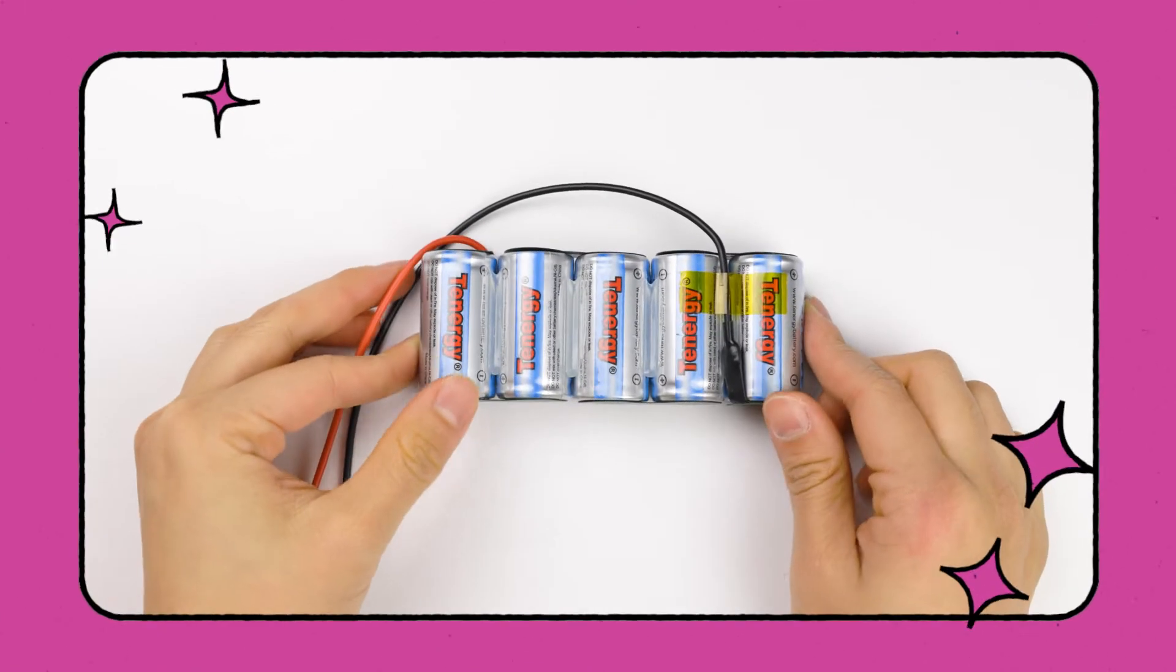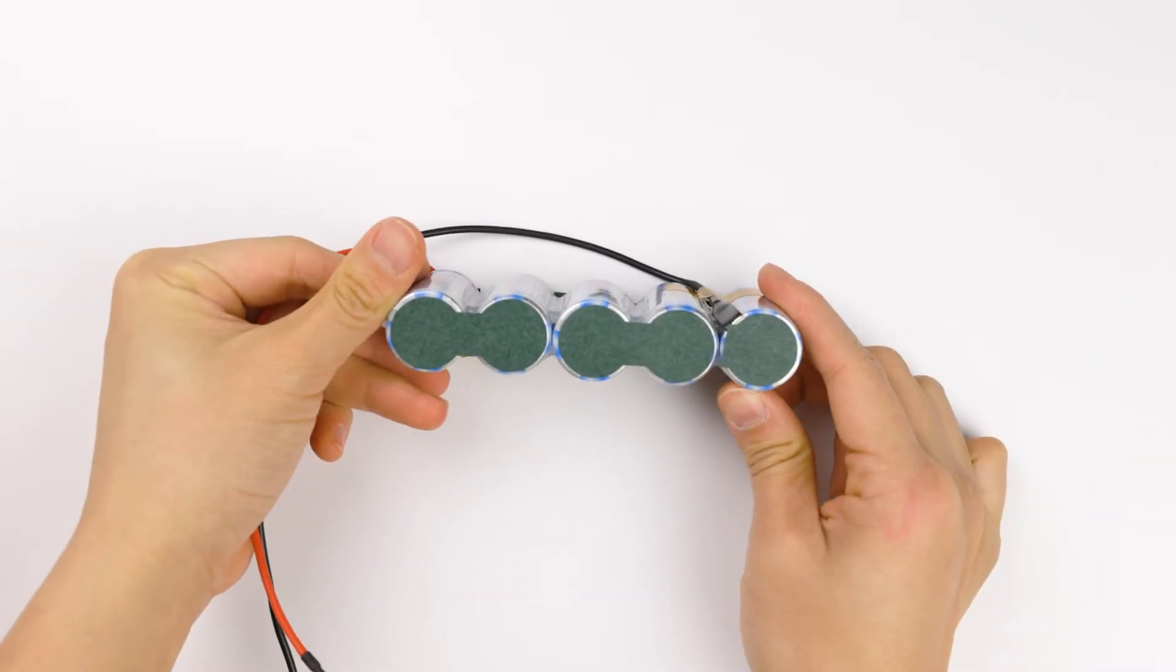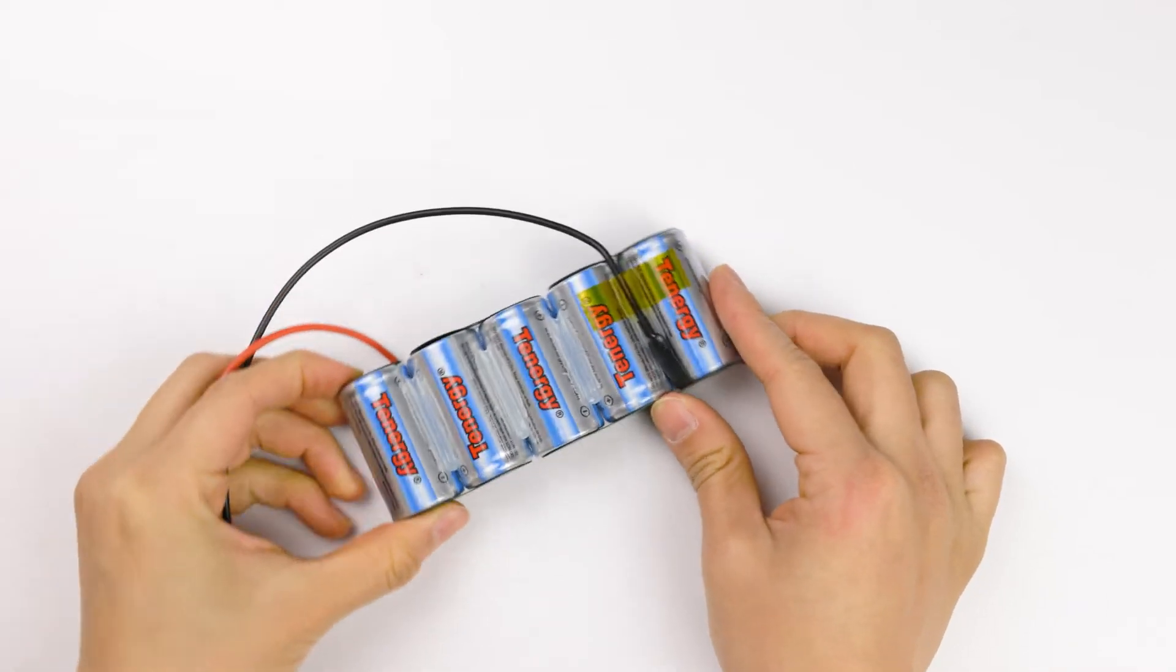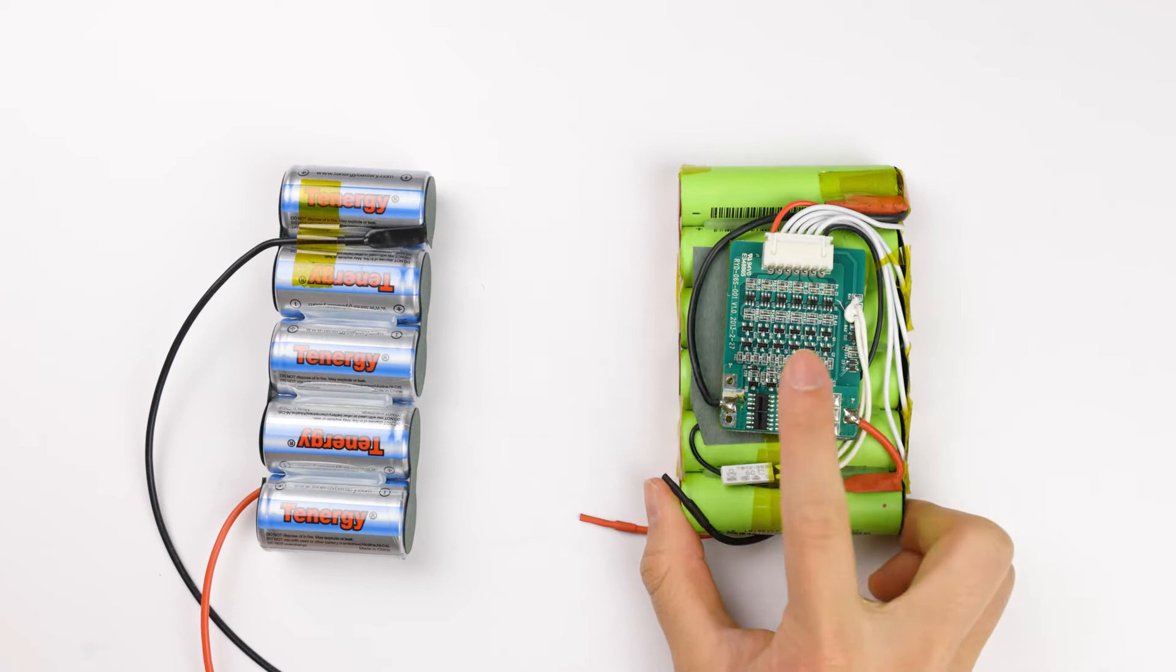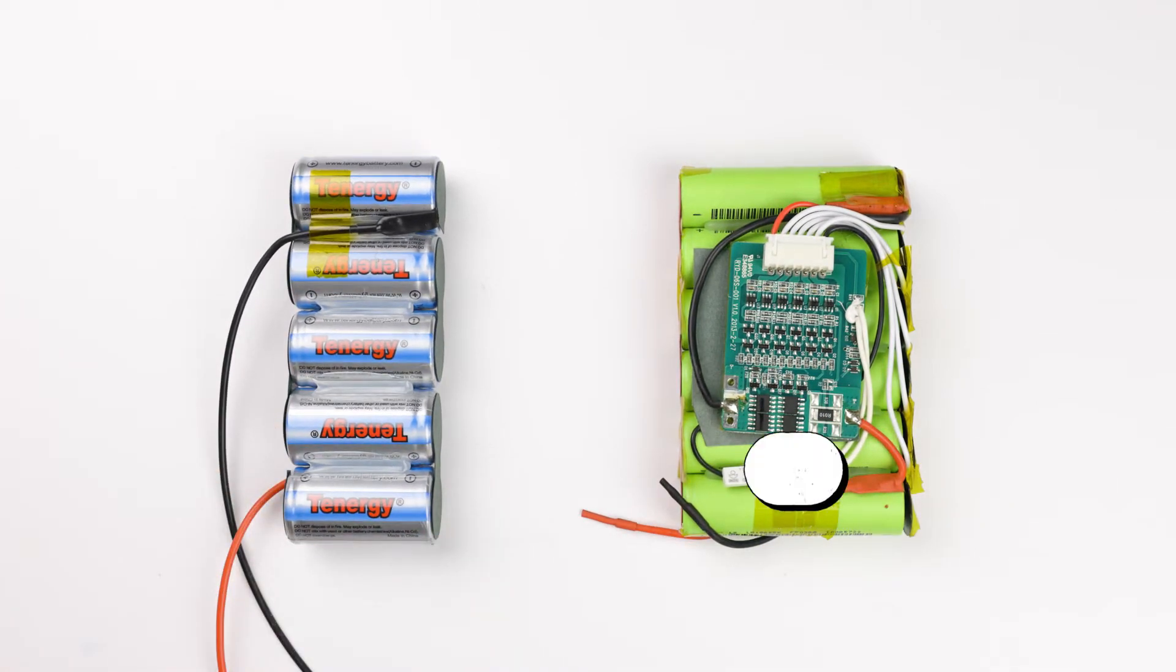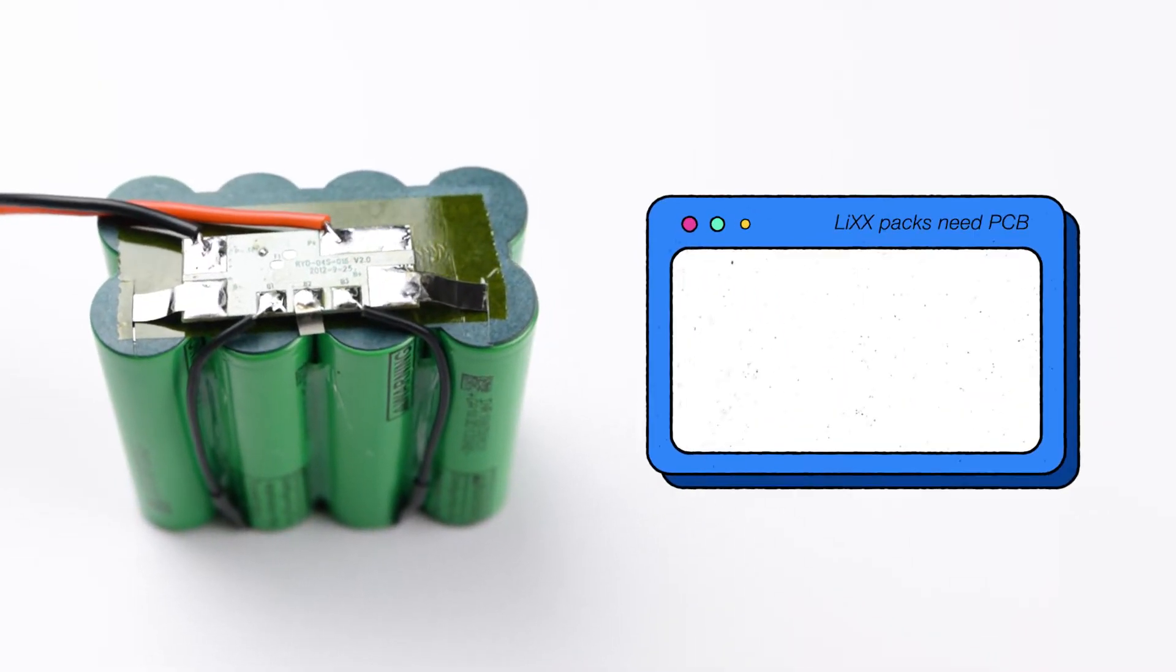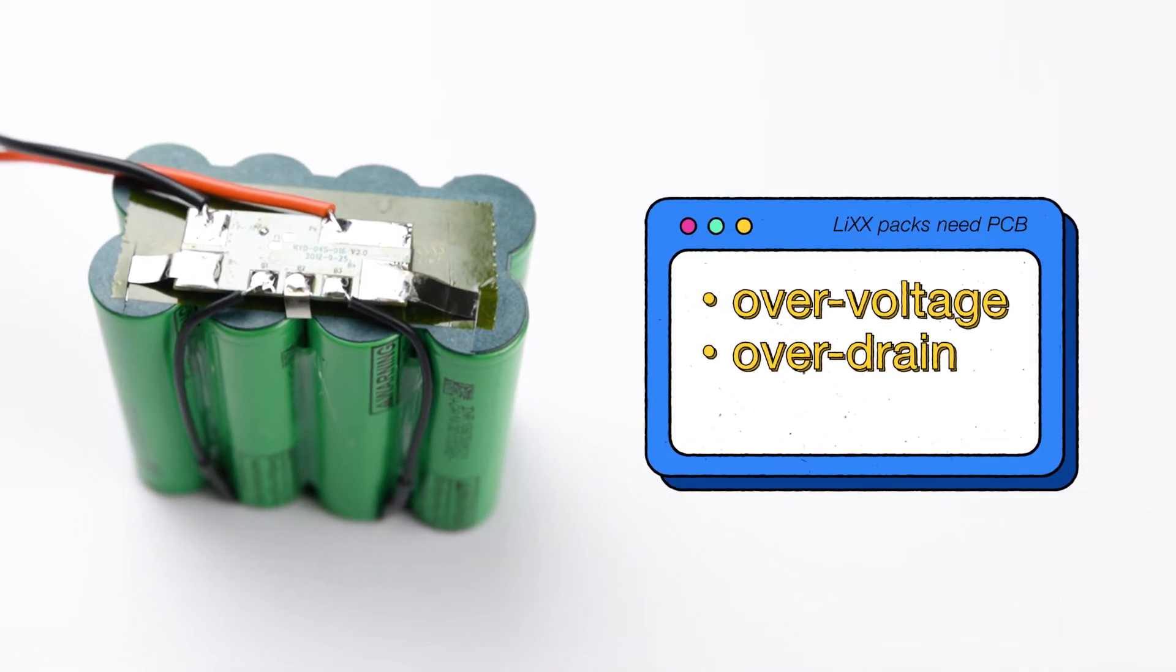One extra note when building nickel-based battery packs: generally PCBs or protection circuit boards are not a hard requirement. A PCB is used to prevent the pack from common issues such as over draining or over charging. You'll only need it when building lithium-based battery packs such as lithium-ion, lithium-ion phosphate, or lithium polymer battery packs, since these chemistries are more sensitive to over voltage, over draining, and over current.